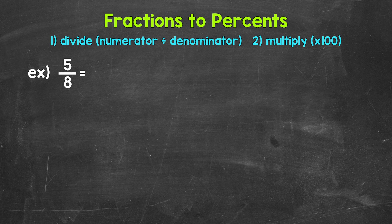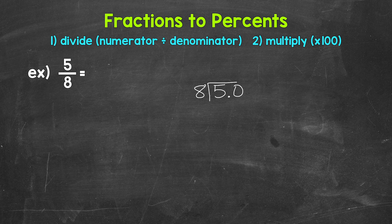So we need to start by converting this to a decimal by dividing. For 5 eighths, we can set this up as 5 divided by 8. We have 5 divided by 8 — how many whole groups of 8 in 5? We can't do that, so we need a decimal and a zero in order to work through this. Once we have that decimal and the zero, we can bring the decimal straight up into where the quotient, the answer, will be. And now we can think of this as 50 divided by 8.